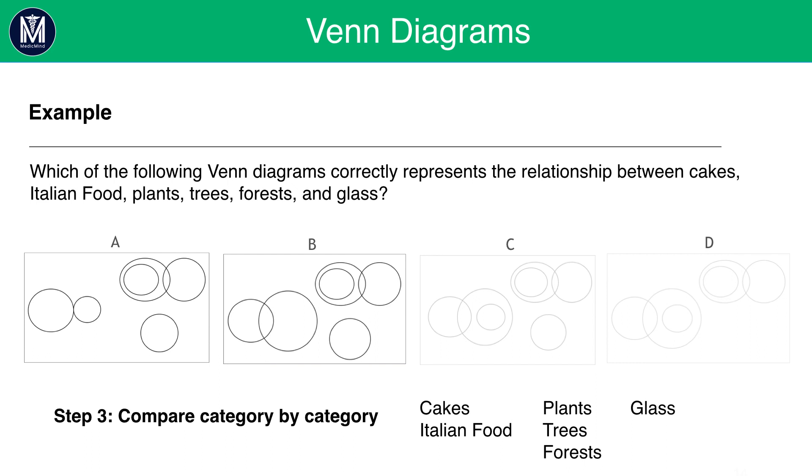But let's check the rest of the information just in case. In area Y, we know that all trees are plants and some trees are forests. The information where it says all trees are plants needs one circle inside another circle and one circle overlapping another circle. These will all be separate to X and Z. Both A and B have this. So it doesn't really help us here. Instead, we have glass in its own category. This means it needs its own separate circle from X and Y. Overall, the answer is B because of what we found out from X when cakes were part of Italian food.